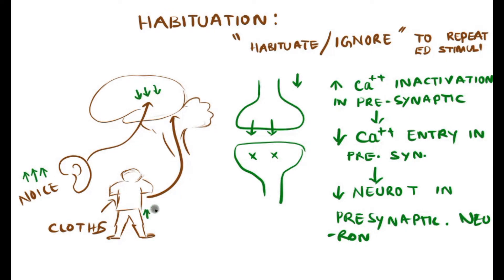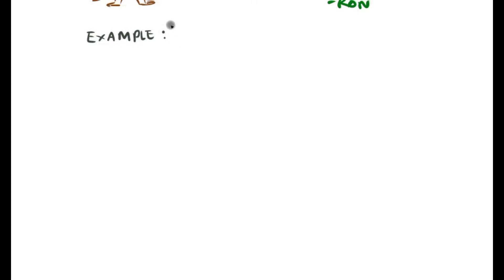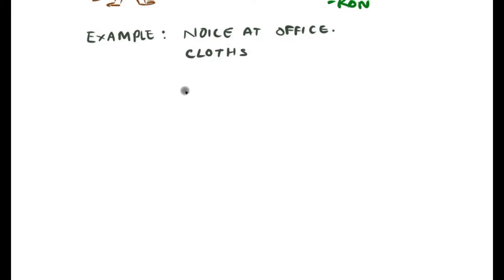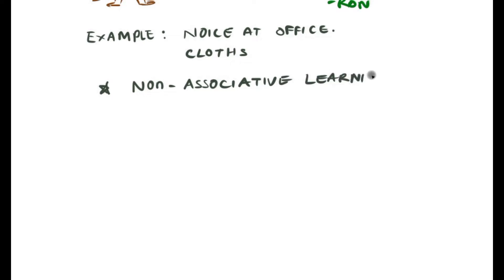So after some time, the stimulus of noise as well as the stimulus of wearing clothes become ignorant in the neurons because of habituation. The awareness that we are wearing clothes is mainly a non-associative stimulus. Non-associative learning is a classical example of habituation.